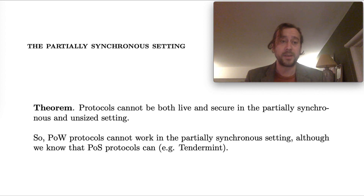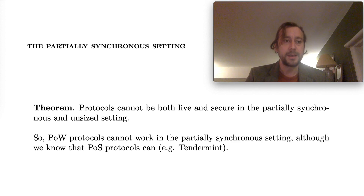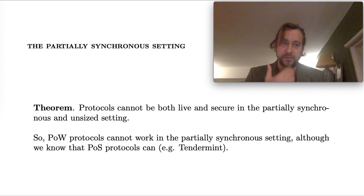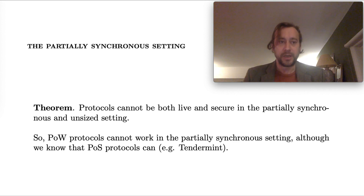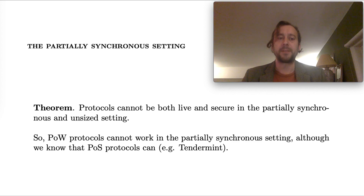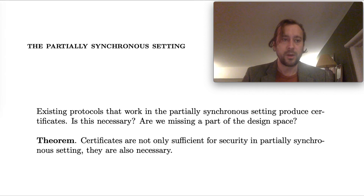Now let's get into results. First, let's consider the partially synchronous setting — the setting in which there may be unbounded network partitions. The first result is that protocols can't be both live and secure in the partially synchronous and unsized setting. So if we're working with something like a proof-of-work protocol, where the resource pool is not given as a protocol input, then it's not possible for a blockchain protocol to function in a partially synchronous setting.